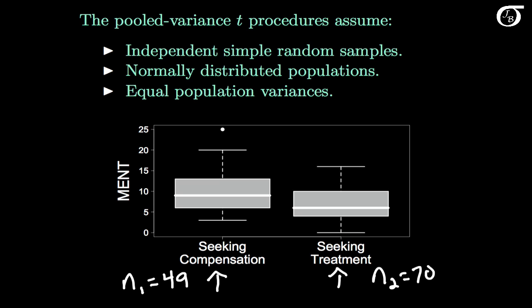The pooled variance t procedures also assume equal population variances. This is unlikely to be perfectly true, but at a bare minimum we'd like the samples to have similar variability, and to a great extent that's true here. One cause for mild concern is this outlier, which we should investigate in greater detail, but it's not too extreme. We also require normally distributed populations. The sample sizes are fairly large at 49 and 70, so the normality assumption is not extremely important, but we'd still feel more comfortable if the samples were approximately normally distributed. The box plots are not perfectly symmetric but don't show very strong skewness. Let's investigate normality in greater detail by plotting normal quantile-quantile plots.